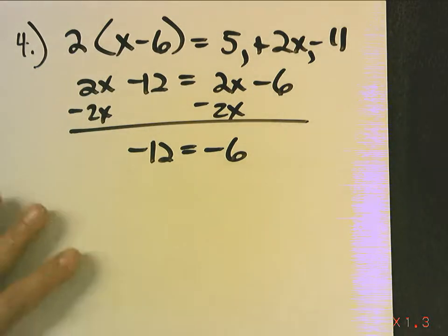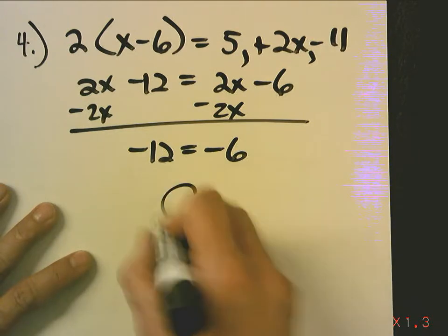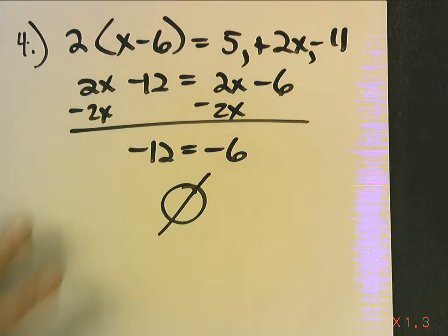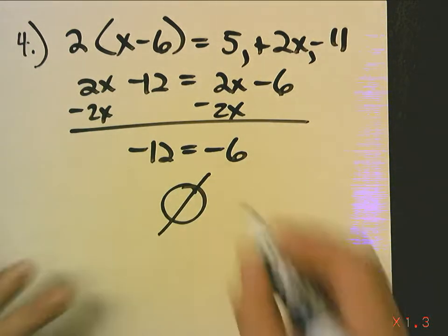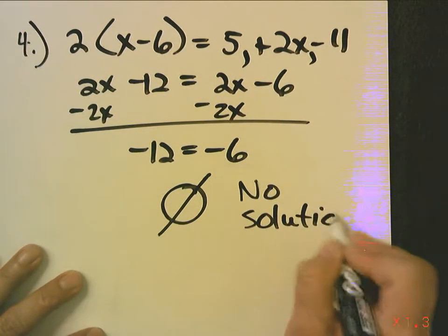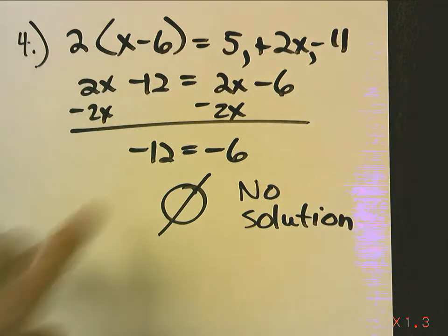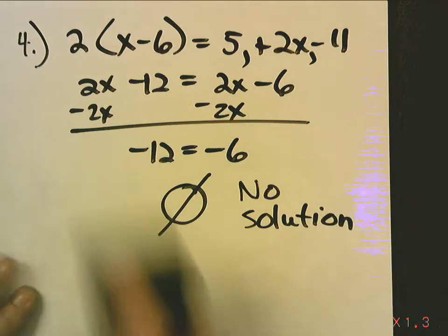So, if your variable disappears and the statement is false, that means there is no real number that will make this true. There is no solution. So, now remember, it is possible for you to end up with an answer that's all real numbers if your variable disappears and you end up with a true statement. Or you could end up with no solution if your variable disappears and you end up with a false statement. Now, turn the page because there's one thing I want to go over.